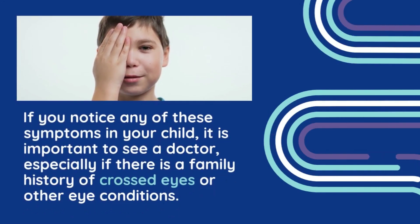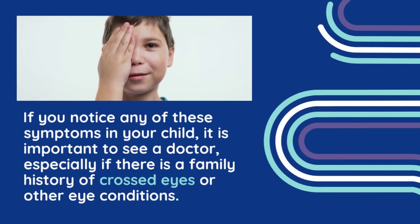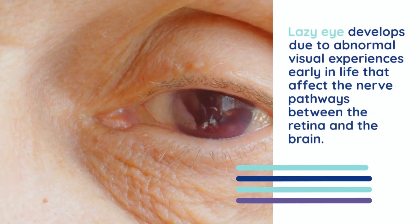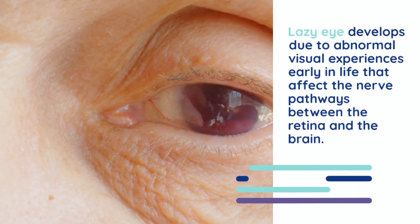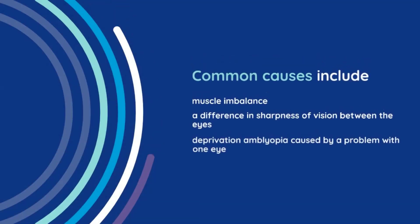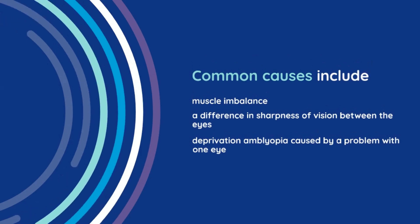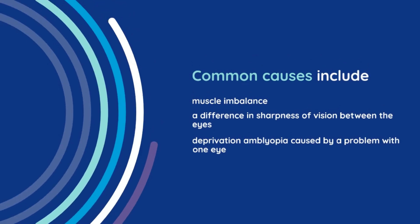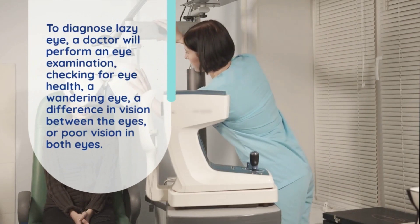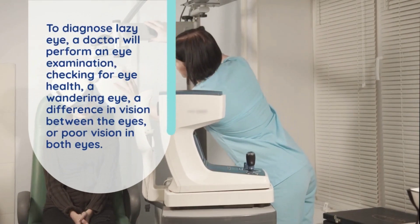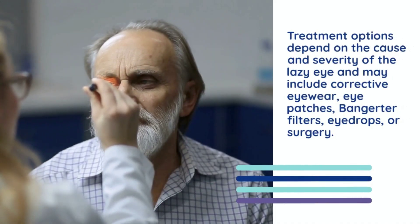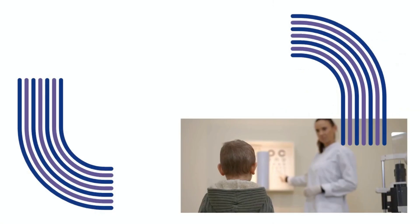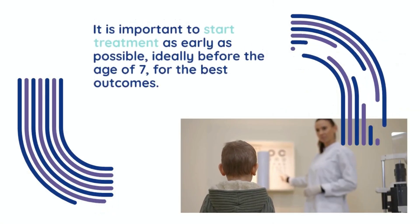Treatment: Corrective lenses — glasses may be prescribed to correct refractive errors. Eye patches — covering the stronger eye to encourage the weaker eye to work. Atropine eye drops — dilating the pupil in the stronger eye to blur its vision, forcing the weaker eye to work. Vision therapy — exercises to improve eye coordination and strengthen the eye muscles. Treatment of underlying conditions like strabismus or cataracts may also be needed. Early intervention is more effective when started at a younger age.